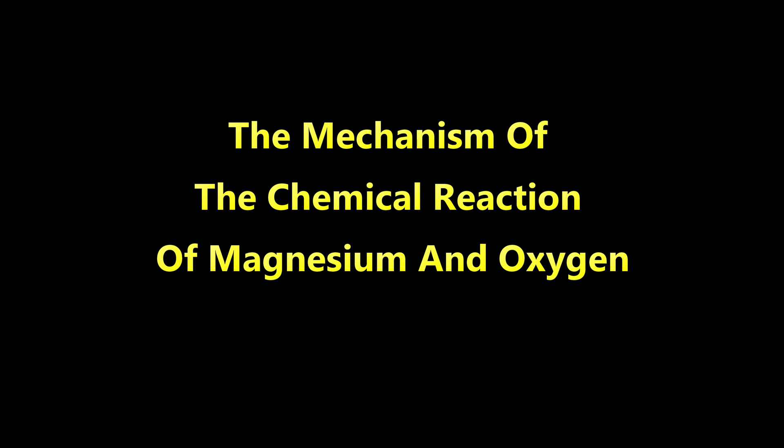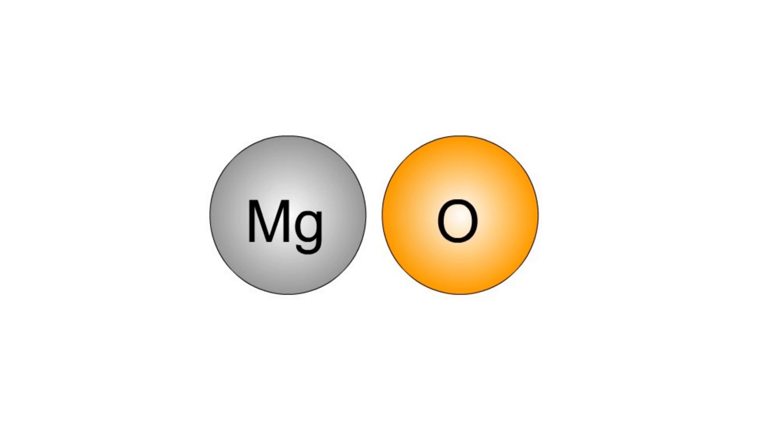The mechanism of the chemical reaction of magnesium with oxygen. A magnesium atom donates two electrons to an oxygen atom to form a positive magnesium ion and a negative oxide ion.